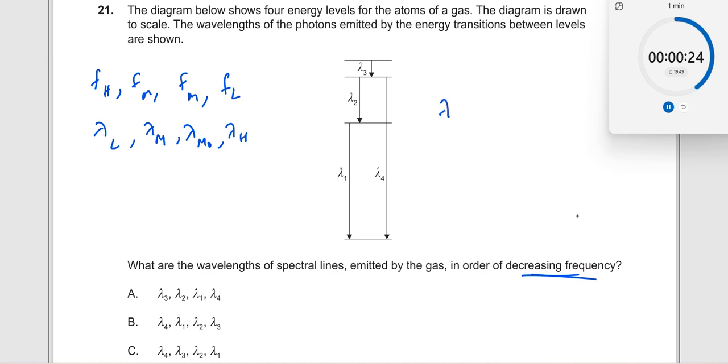Now we know that lambda is equal to hc divided by delta E. Now which has the largest value of delta E? Lambda 4 is the largest one, which means this will be the least wavelength.